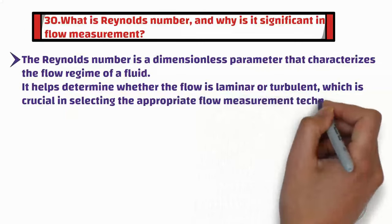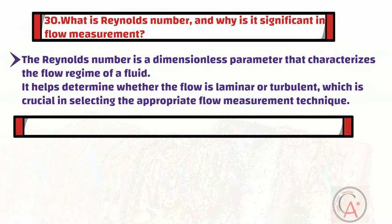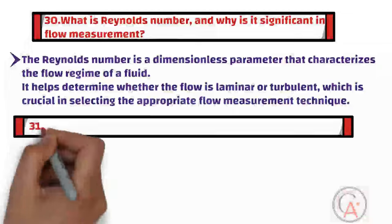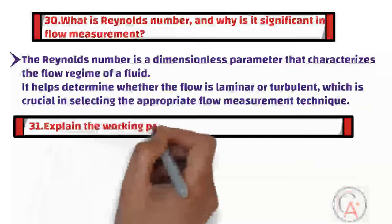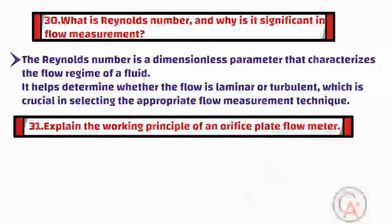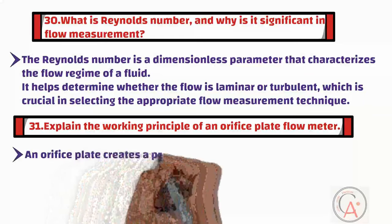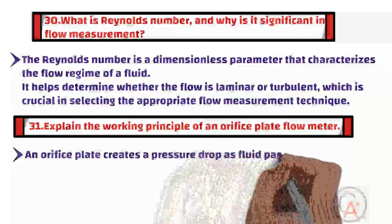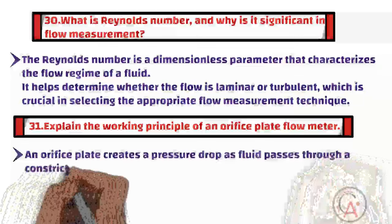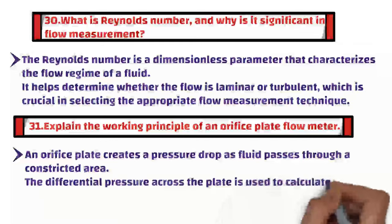The thirty-first question is: explain the working principle of an orifice plate flow meter. An orifice plate creates a pressure drop as the fluid passes through a constricted area. The differential pressure across the plate is used to calculate the flow rate using the Bernoulli equation.